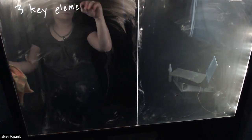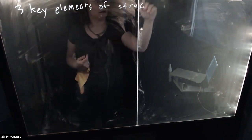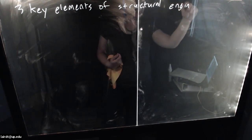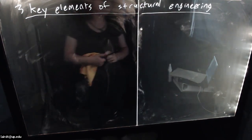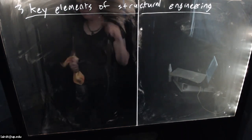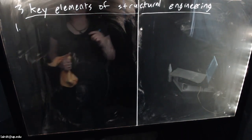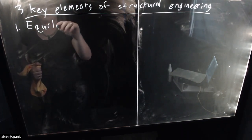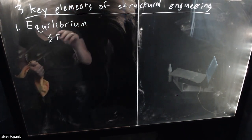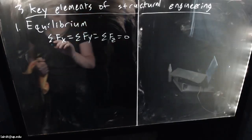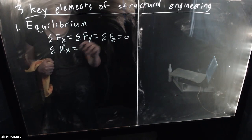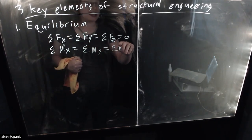The three key elements of structural engineering are the foundations of the entire discipline. All of the tools, methods, and analyses we will perform are ultimately based on these three fundamental principles. The first is equilibrium — the sum of forces in the x, y, and z directions equals zero, and the sum of moments about any axis equals zero. You're calculating forces, moments, and torques applied to a structure and setting them equal to zero because the structure must be in equilibrium.